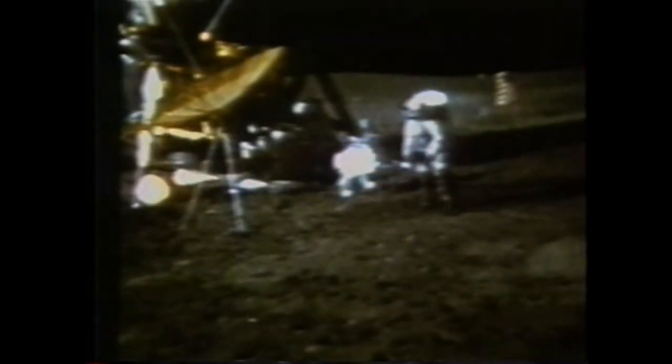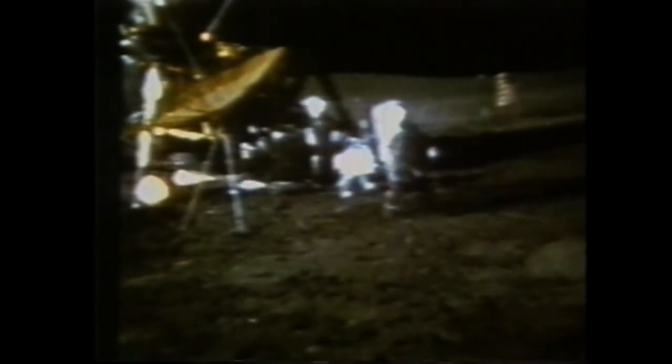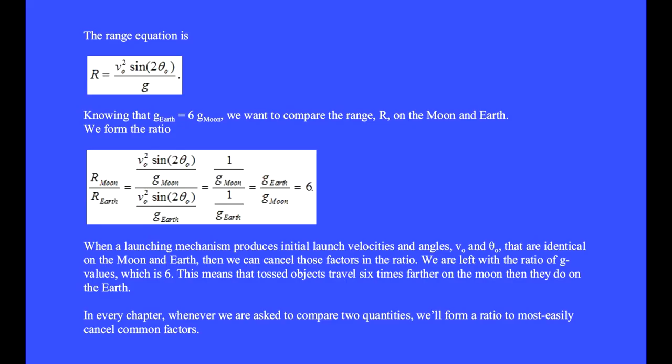The range equation works anywhere in the universe, including on the moon. The acceleration due to gravity on the moon is 1/6 of what it is on the earth. Here is a golf shot on the moon. How do the range distances compare for a golf shot on the moon and the earth if both are launched with the same initial velocity and angle? The range equation is R = v₀²sin(2θ)/g.